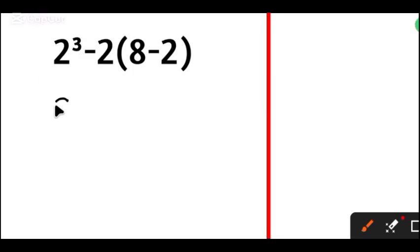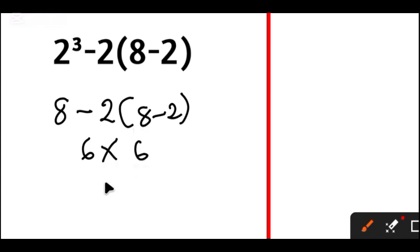2 raised to the power 3 is 8, minus 2, 8 minus 2 in parenthesis. 8 minus 2 gives us 6, times 8 minus 2 equals 6, 6 times 6 equals 36.